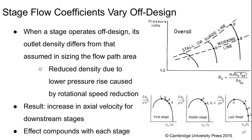To see how this can happen, let's look at the stage flow coefficient variation off-design. Consider a compressor—it may be multi-stage—and we'll look at the first stage, the middle stage, and the last stage. When a stage is operating off-design, its output density is different from what was assumed in sizing the flow path cross-sectional area. If we get reduced density due to a lower pressure rise caused by a rotational speed reduction, the result is a higher axial velocity for a downstream stage, and that effect compounds for each stage of the machine.